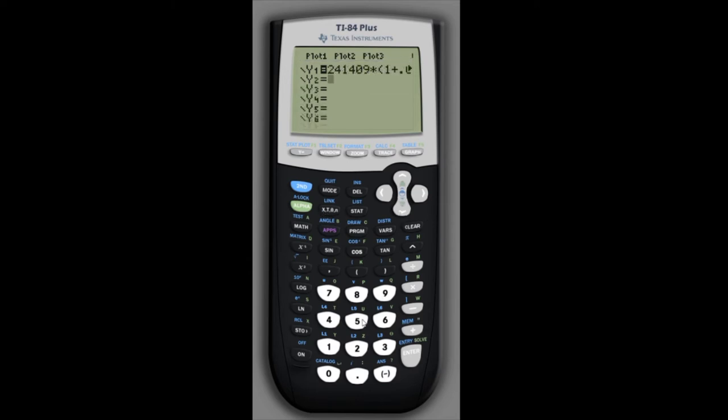Then we need to also plot y equals 400,000 on the same graph. And now if we graph this, we don't see anything yet because we're in the wrong window, so we need to scale this to the point where we can see what we're looking at.